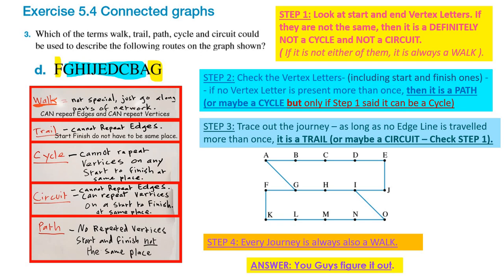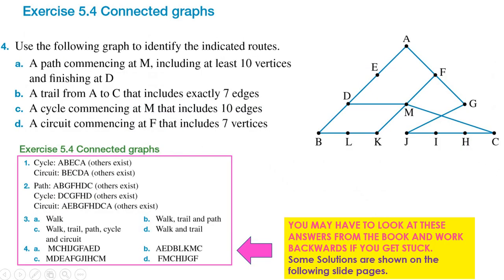This slide is a good one for your summary notes — these are good steps to follow. Step one: always check the start and finish first to see if you might be doing a cycle or circuit. If they're not the same, you've ruled out those two. Everything's always a walk, so you've only got path and trail to worry about. Vertex letters visited only once gives you a path; going along lines only once for each line gives you a circuit. You can have both a path and a circuit in a given journey.